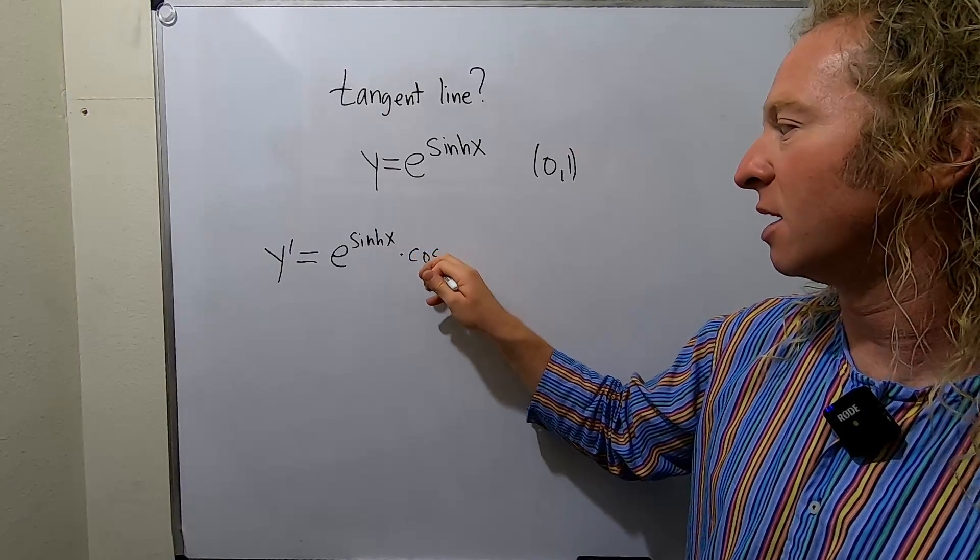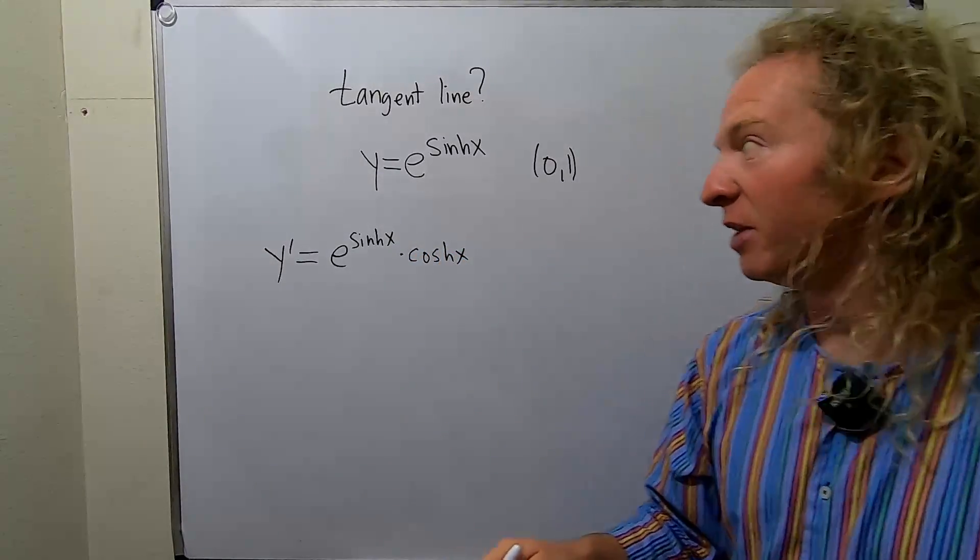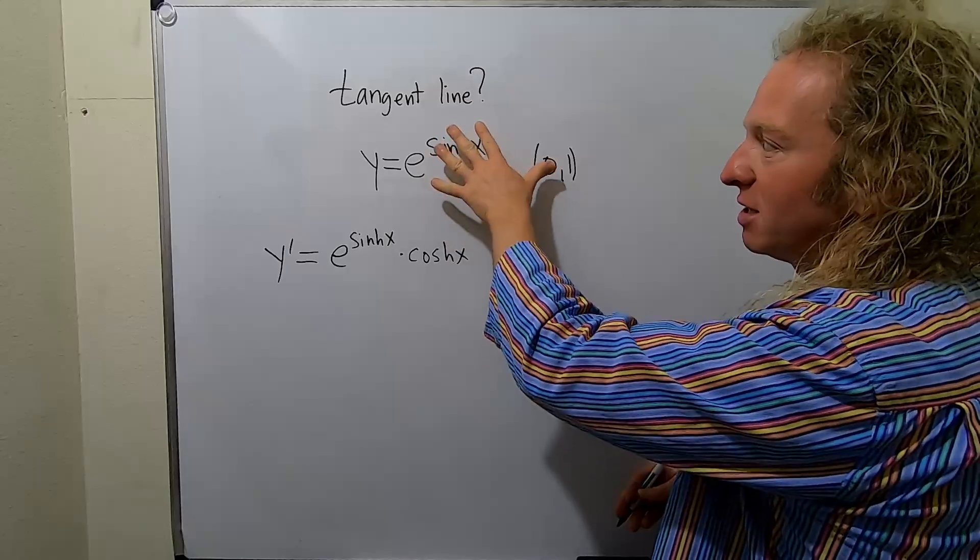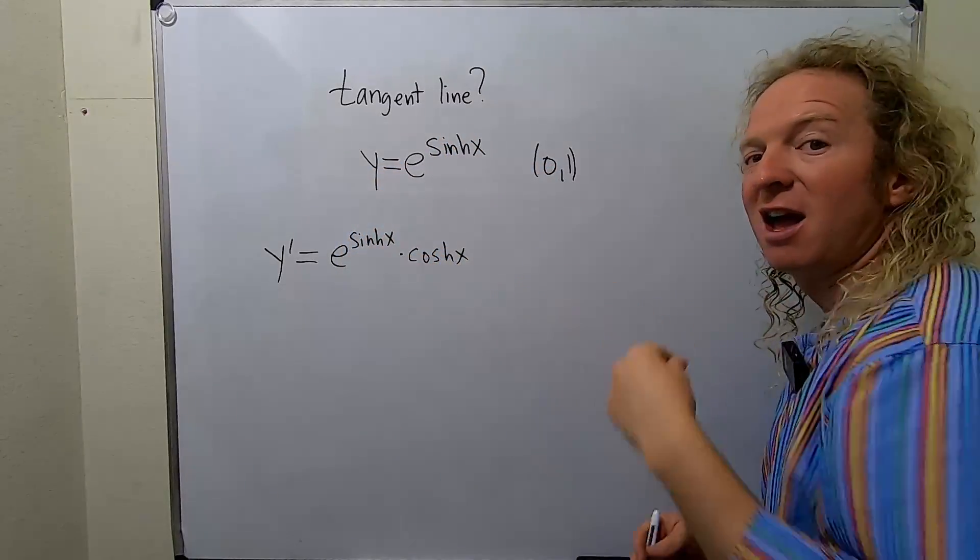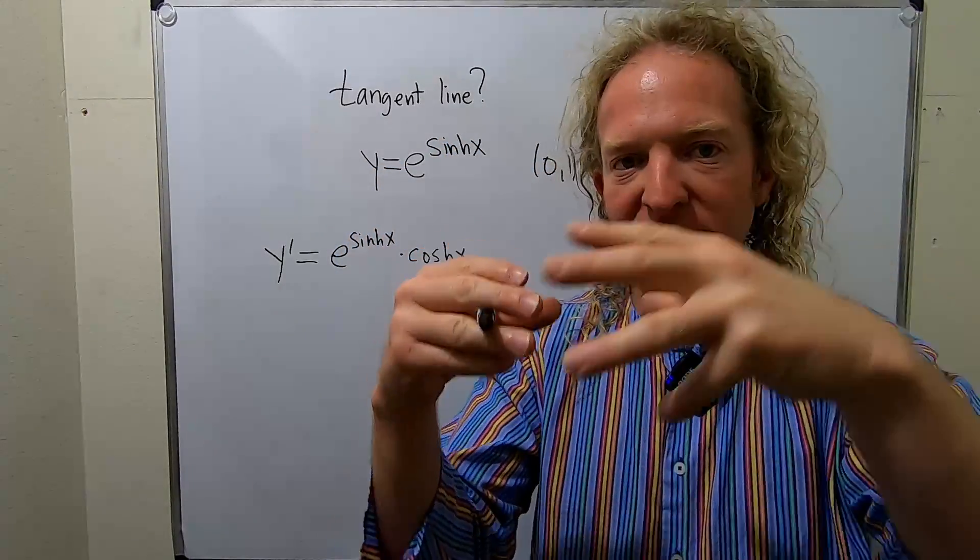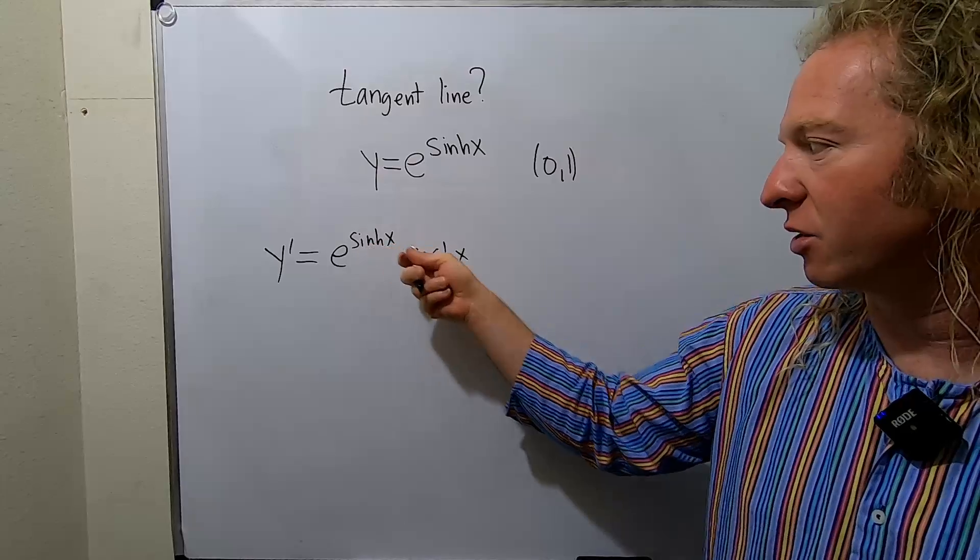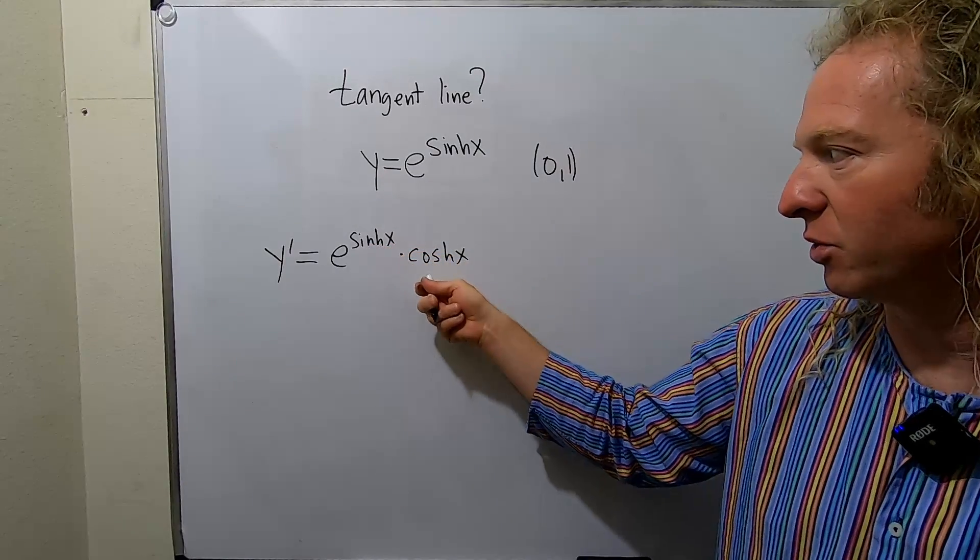So the derivative of e^x is e^x. Here it's e^(sinh x), and then you multiply by the derivative of the inside, which is cosh x. The derivative of sinh is cosh.